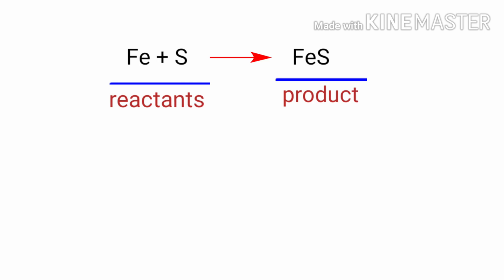In this equation the reactants are iron and sulphur and the product is ferrous sulphide. If you look at this equation, the number of atoms at the reactants' side are the same as the number of atoms at the product's side.